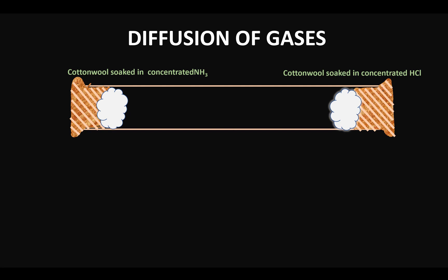To explain this, I've made use of a simple experiment. As you can see on the screen, there is a tube that contains two cotton wools — one which is soaked in concentrated ammonia and the second that is soaked in concentrated hydrochloric acid — and there are rubber bungs that are tightly fitting into the two open ends of the tube.